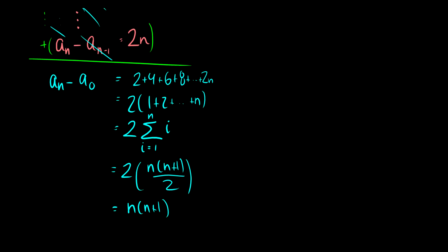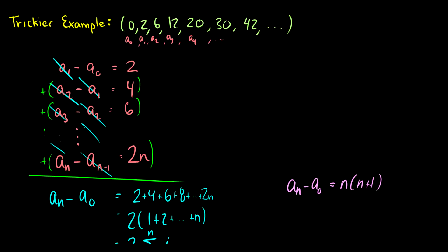So the recurrence relation solution is a_n minus a_0 is equal to n times (n+1). What is a_0? Let's take a look here. a_0, oh, 0. So a_n is equal to n times (n+1). So this is the solution.